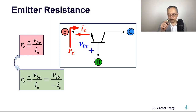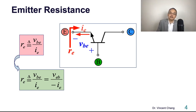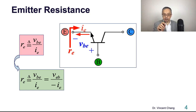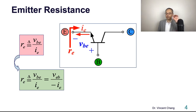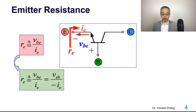You might feel uncomfortable because IE is flowing into your eye — if you stand at the emitter and look into it, the emitter current is coming toward you. You can also define RE as VEB divided by negative IE; this will give you the same positive value for the emitter resistance.